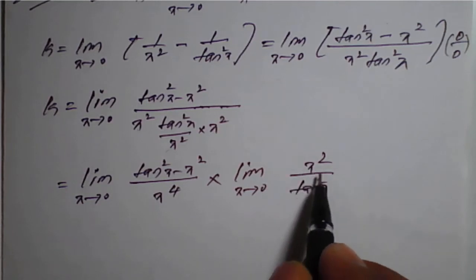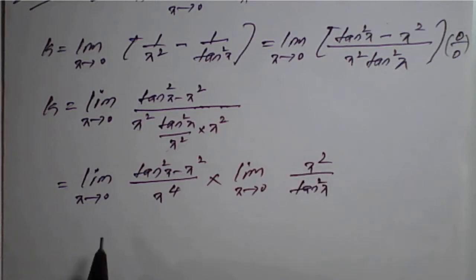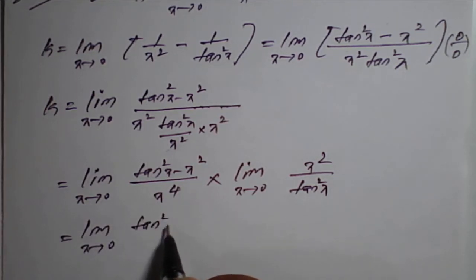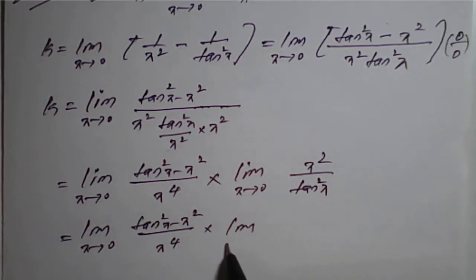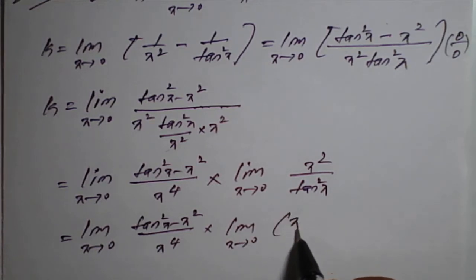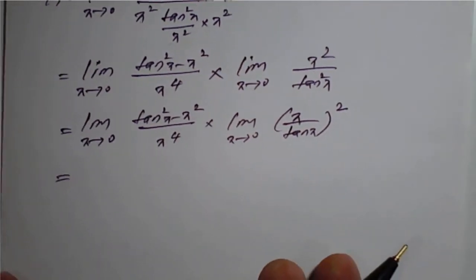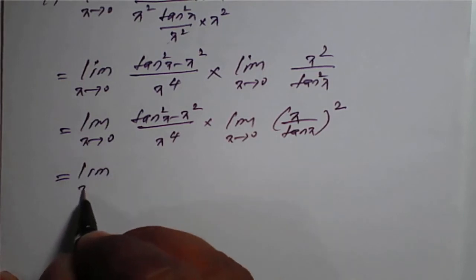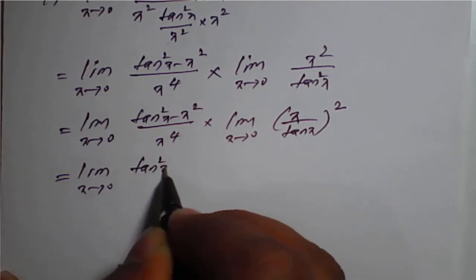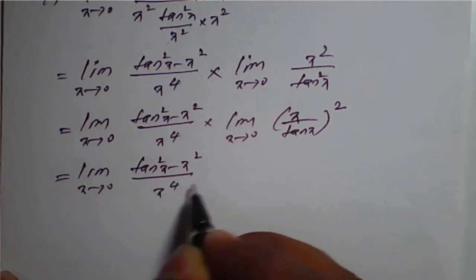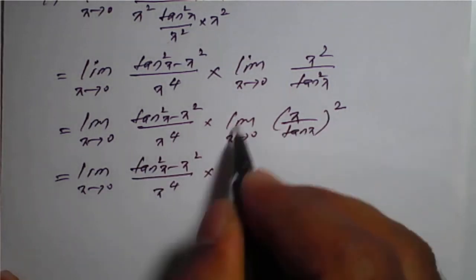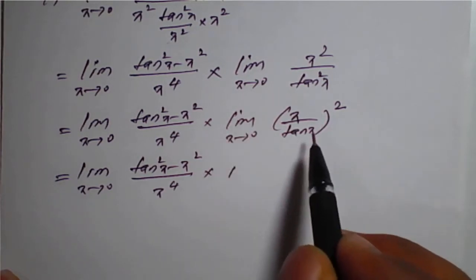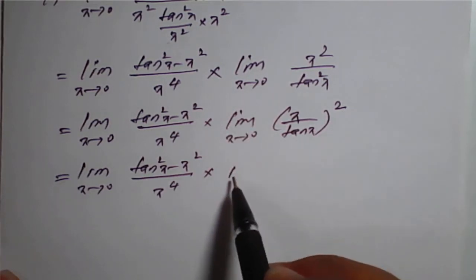This can be rewritten as: limit x tends to 0 of (tan square x minus x square) divided by x raised to 4, times limit x tends to 0 of (x divided by tan x) whole square. Using the standard identity, limit x tends to 0 of (x/tan x) equals 1, so this factor becomes 1 squared, which equals 1.